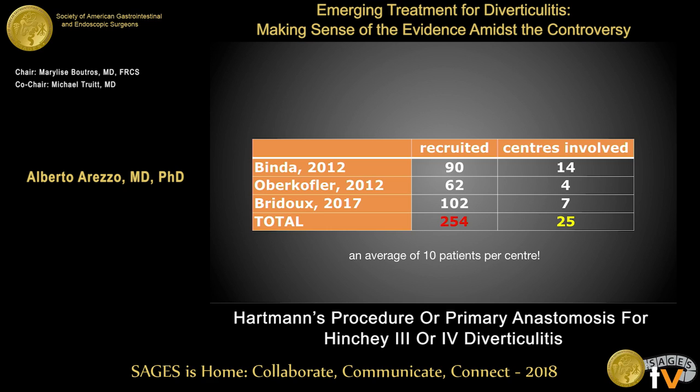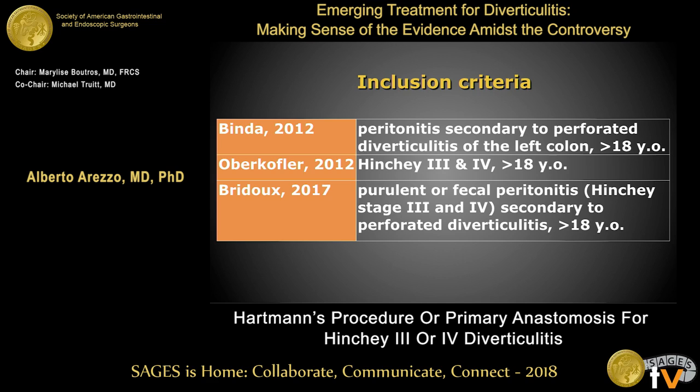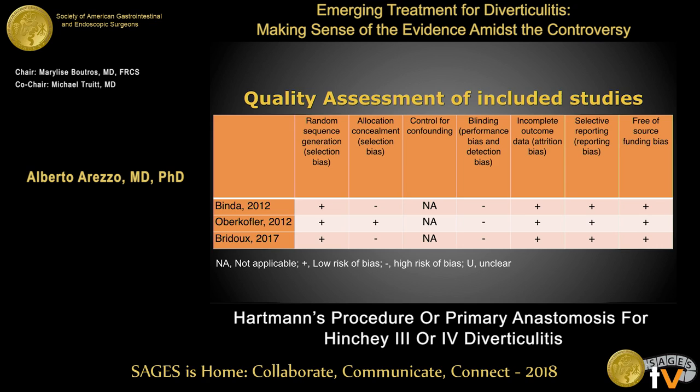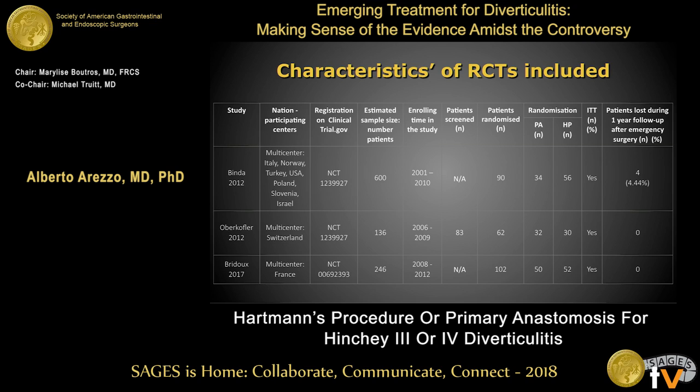Twenty-five centers were included in the three studies, making an average of only 10 patients per center — a really small number. The inclusion criteria were more or less the same: only Hinchey 3 and Hinchey 4 patients were included. Quality assessment showed quite good quality in all three studies, except for blinding, which is more or less impossible in these cases, and for control of confounding, which was not available in any of the studies.